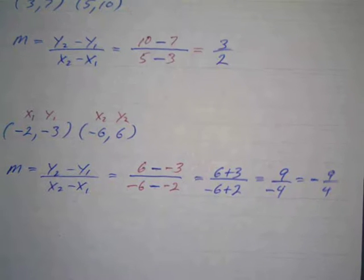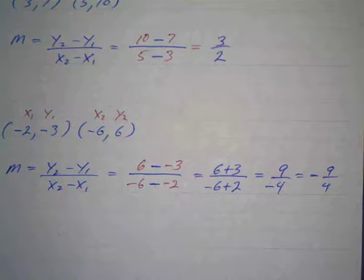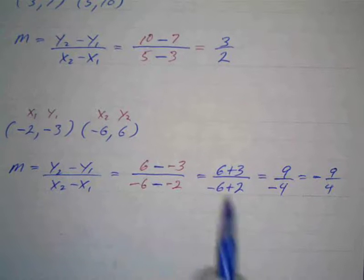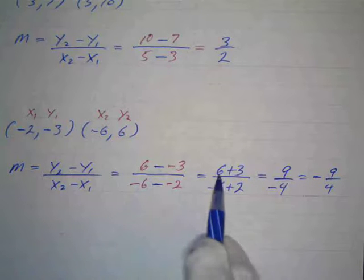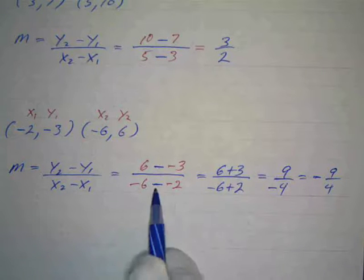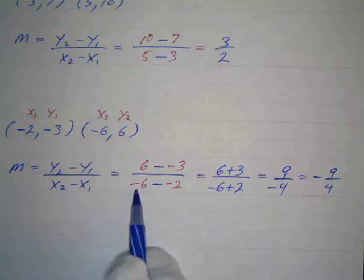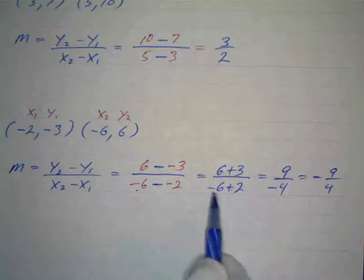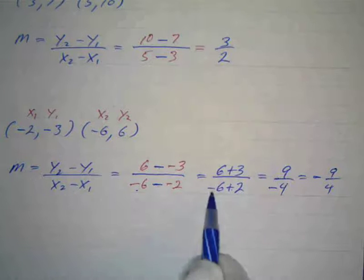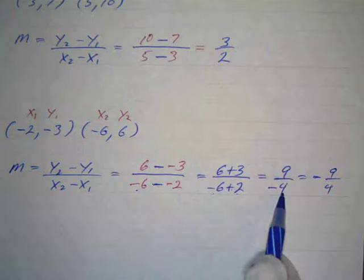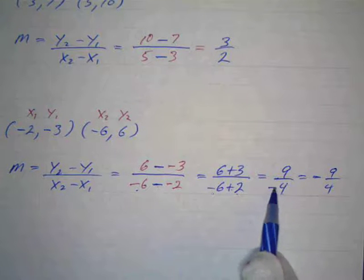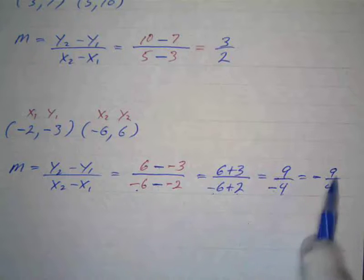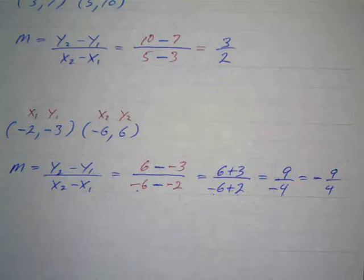And that's what we're going to get. So there's your slope. Negative 9 fourths. So take a look at that. That should make sense. Again, a negative times a negative is a positive. So I've got 6 plus 3. A negative times a negative is a positive here, but this negative carries over. 6 plus 3 is 9. Negative 6 plus 2 is negative 4. And again, I can move this negative sign in the top or in front. So I'll just put it in front here. And there's your slope, negative 9 fourths.